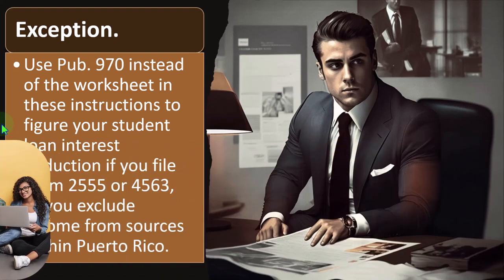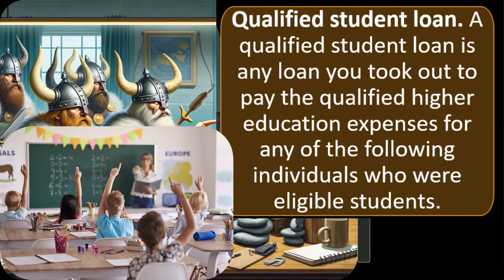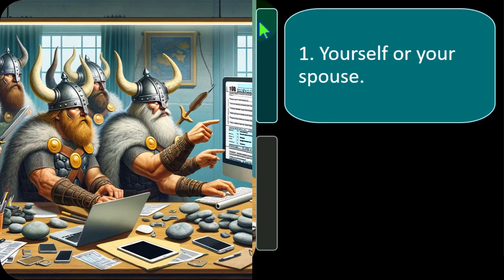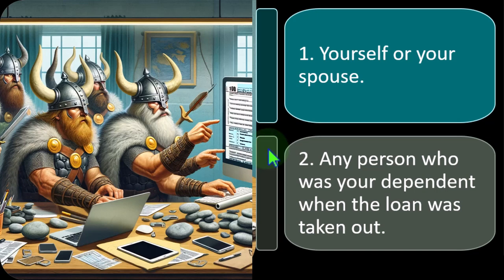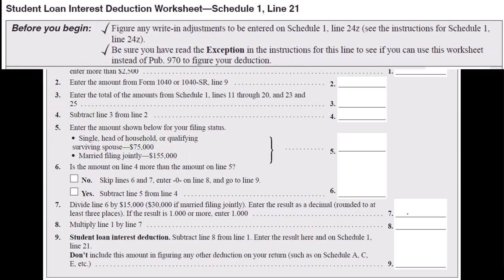What is a qualified student loan? When you take out the loan you get the money, and when you're paying back the student loan that may be at a point after you've already gone through school — now repaying the student loan with interest. A qualified student loan is any loan you took out to pay qualified higher education expenses for: (1) yourself or your spouse, or (2) any person who was your dependent when the loan was taken out.